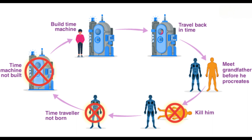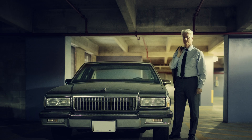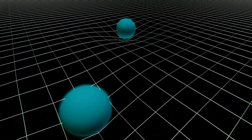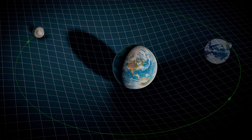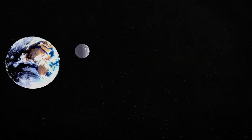Fact number four is time travel to the future. While traveling to the past often captures our imagination, traveling to the future is also a mind-bending concept. According to Einstein's theory of general relativity, time dilation occurs in the presence of a strong gravitational field. This means that if you were to hover near a black hole or travel at near-light speeds, time could pass slower for you compared to others in a less intense gravitational field. This could potentially allow you to journey thousands of years into the future while only aging a fraction of that time.